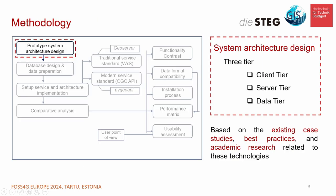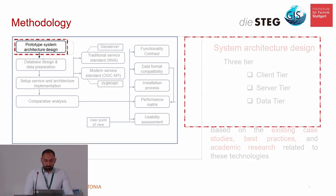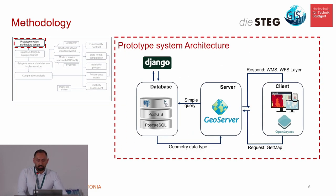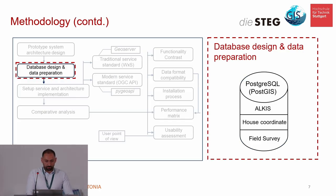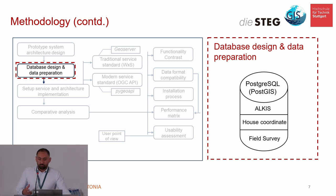This is the methodology of our work. First, the prototype system architecture design. We are using a three-tier architecture: client, server, and data. Our database is PostgreSQL with PostGIS. The server is GeoServer, and as a client we are using OpenLayers. For the OGC API, we replace the server — GeoServer — with PyGeoAPI. Our database is PostgreSQL, and our input data is the ALKIS data, which is the official cadastral data in Germany containing house coordinates, along with field survey data captured in the company.